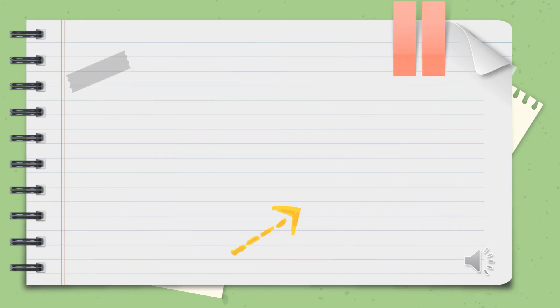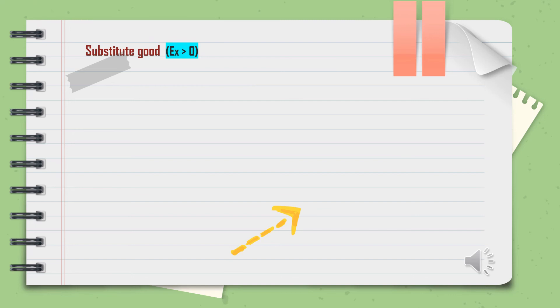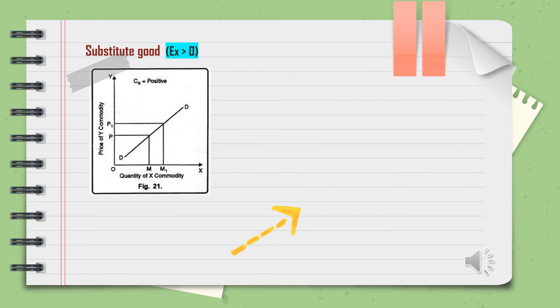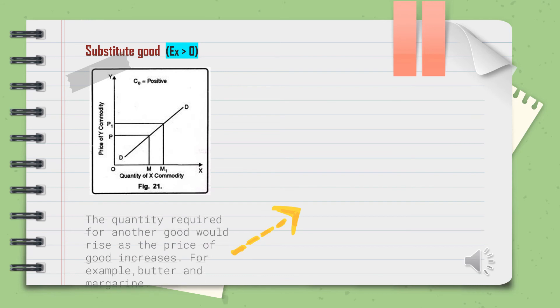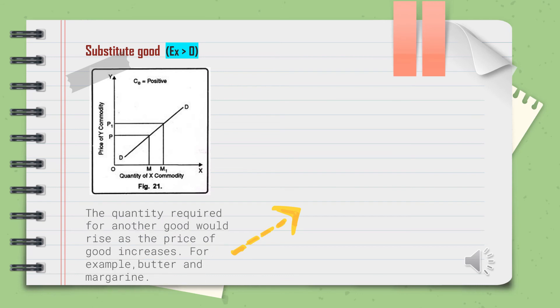The last degree is substitute goods. The cross-elasticity value for substitute goods is more than 0, meaning when the price of one good increases, the quantity demanded of the other good will also increase. For example, butter and margarine are substitutes.